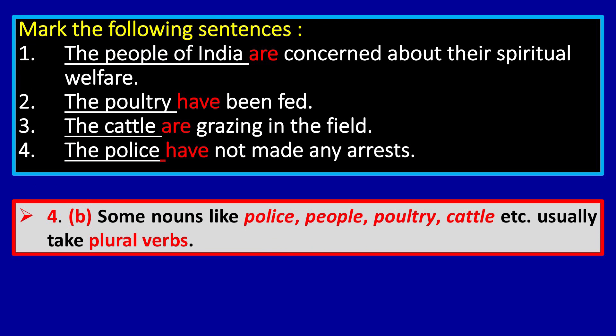The people of India are concerned about their spiritual welfare. The poultry have been fed. The cattle are grazing. The police have not made any arrest. Words like 'people,' 'poultry,' 'cattle,' and 'police' always take plural verbs. Note: 'a policeman has' — singular — but 'the police have' — plural, meaning all the policemen. These words are always treated as plural in form.